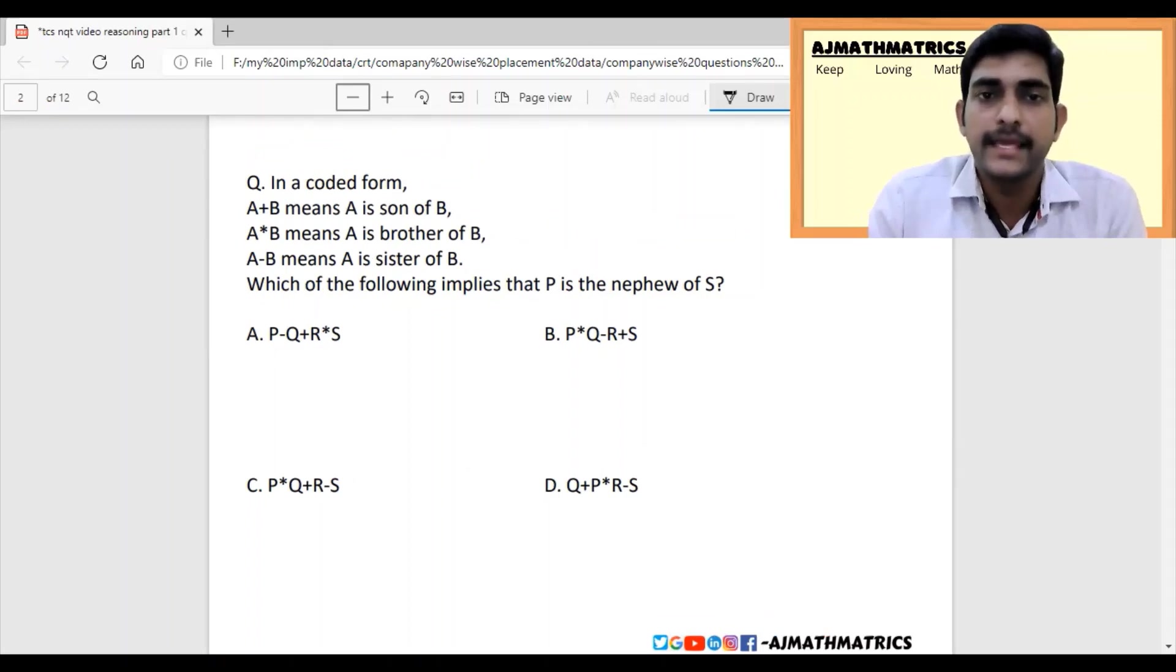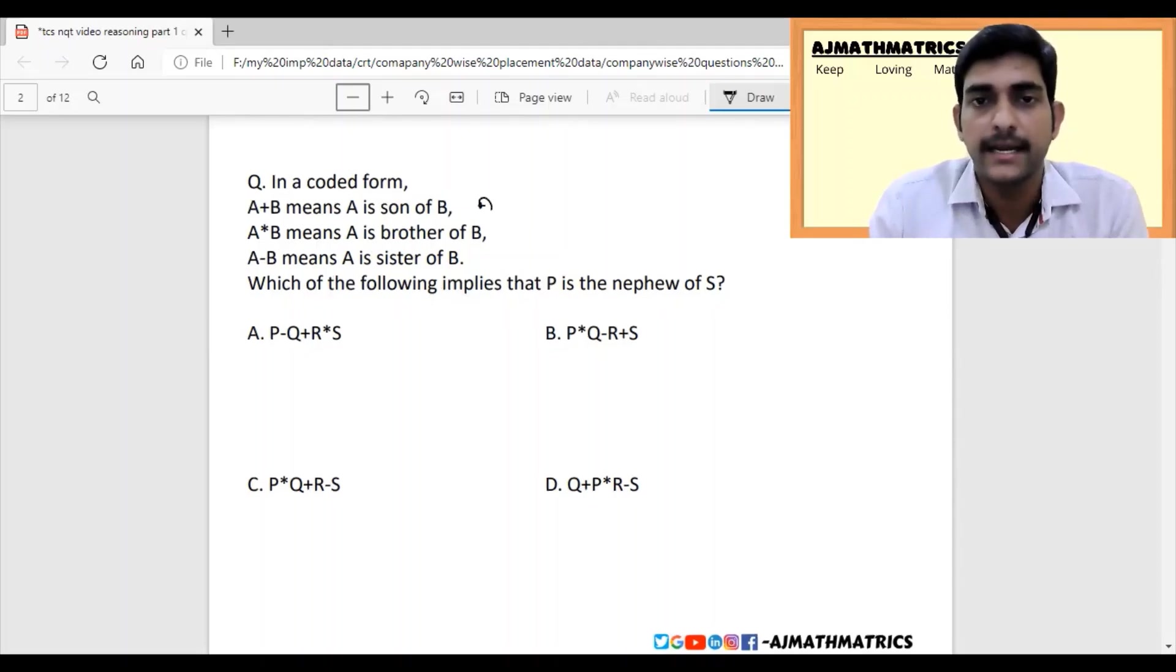A plus B means A is the son of B, which represents that A is male and A is one generation below B. A star B means A is the brother of B, which means A is male and A and B are in the same generation. A minus B means A is the sister of B, which means A is female and A and B are in the same generation. Now the question asks which of the following implies that P is the nephew of S?